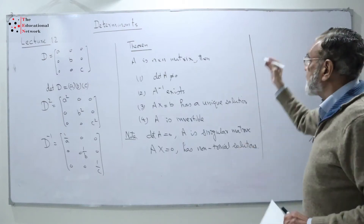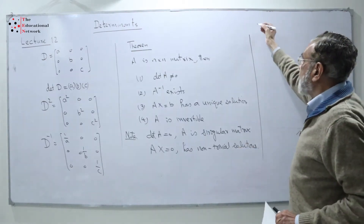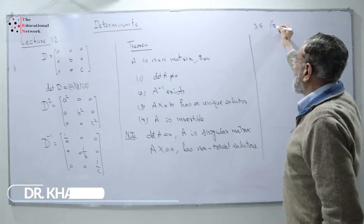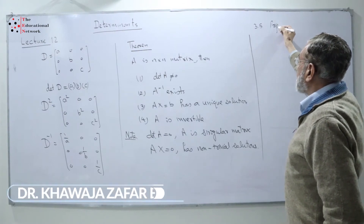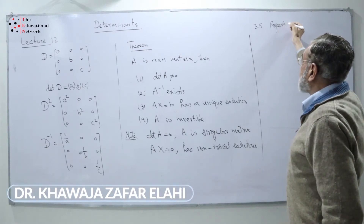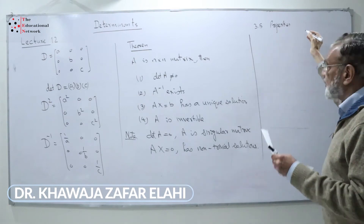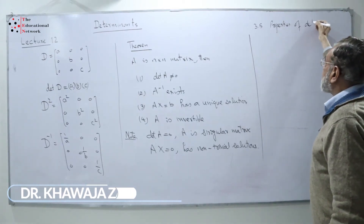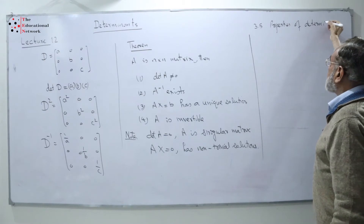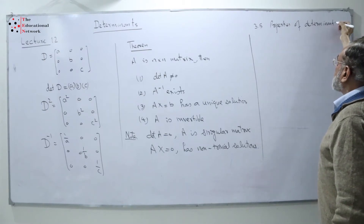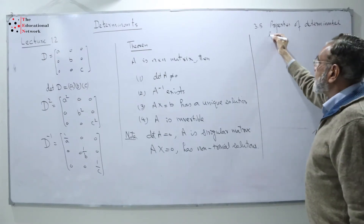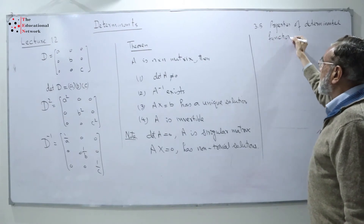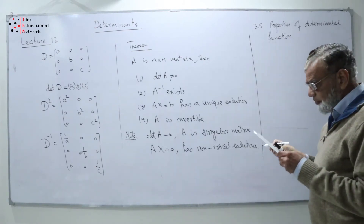I will discuss here Section 3.5 which is relative to the properties of determinants of a function. There are certain properties related to determinants that we will go through.